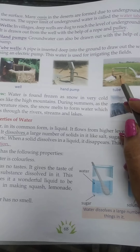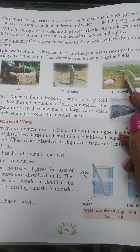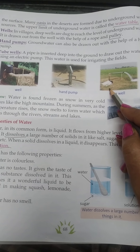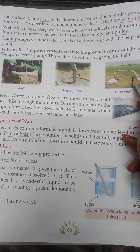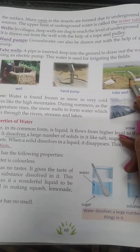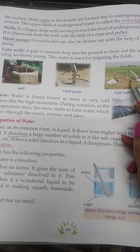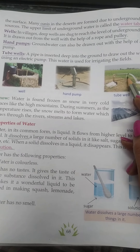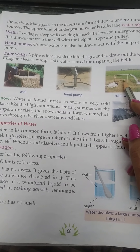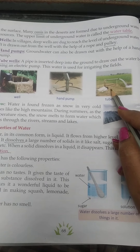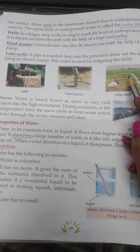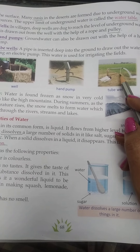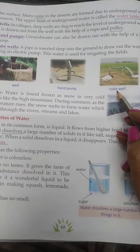Next is tube wells. See in the picture — a pipe is inserted deep into the ground to draw out water using an electric pump. This water is used for irrigation of the field. Irrigation means watering the plants. In a tube well, a pipe is inserted deep into the ground to draw out water using an electric pump. You can see tube wells in the fields.